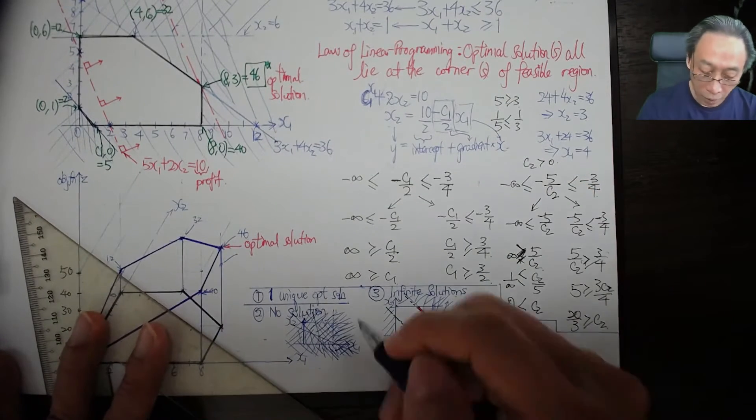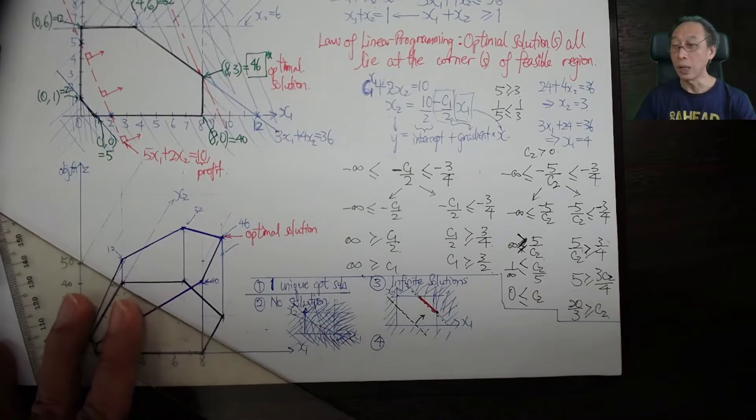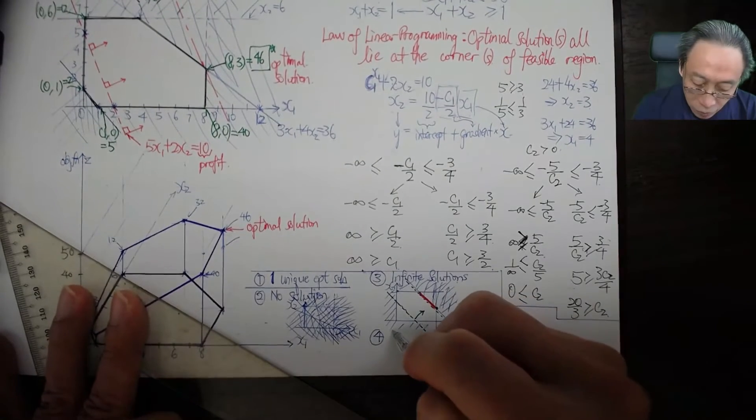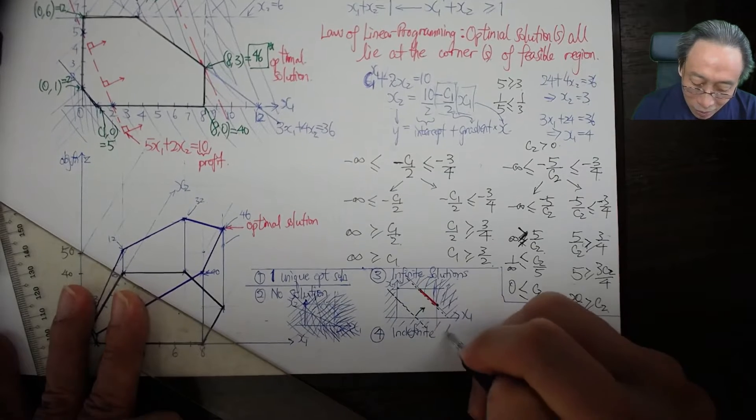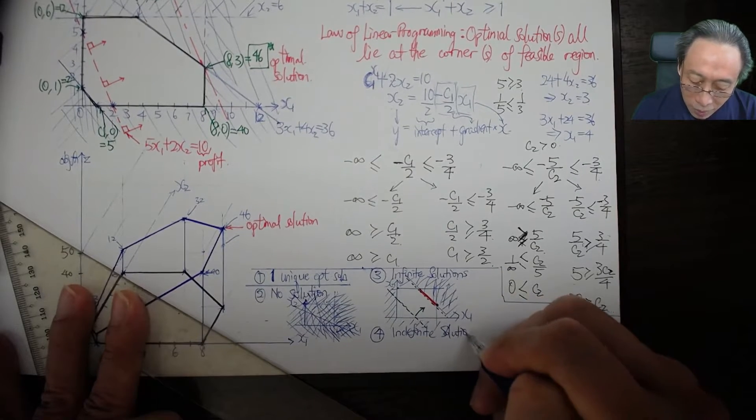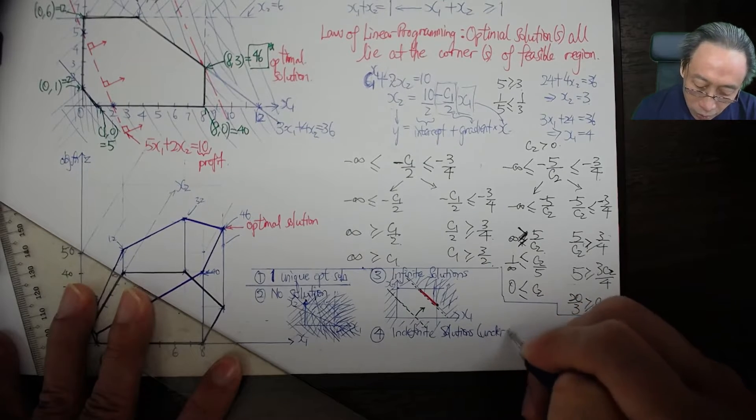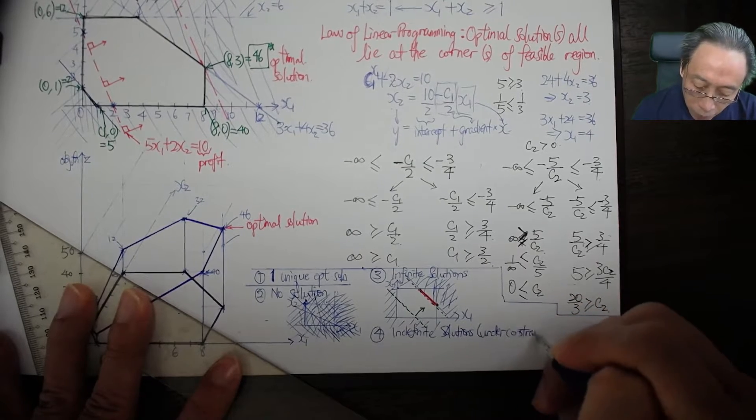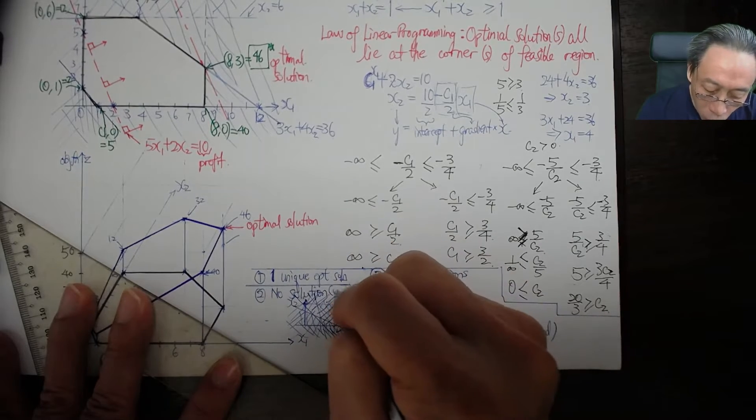Lastly, we have the fourth case where we have indefinite solution. Indefinite means under-constrained, and as a comparison, no solution means over-constrained.